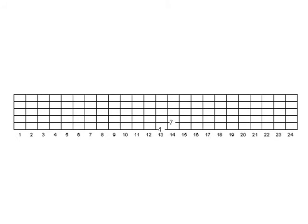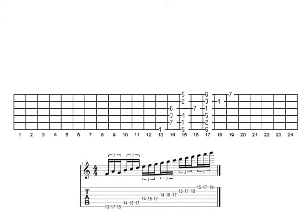Three-note-per-string pattern four starts on the fourth of the scale — F on the thirteenth fret. We start with an augmented fourth shape, then perfect fourth, perfect fourth, perfect fourth, perfect fourth, perfect fourth, perfect fourth, and finally another augmented fourth. Here's the interval structure information and the note information. Going from pattern three to pattern four, this is all you needed to learn.